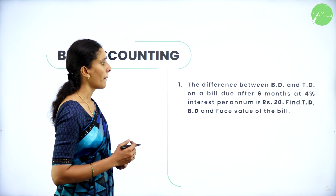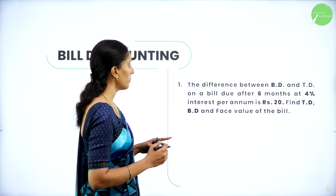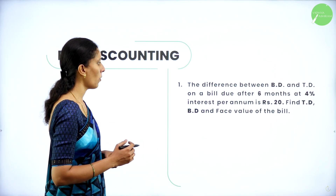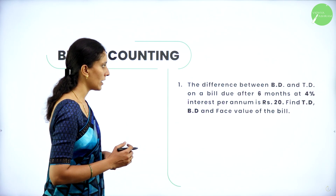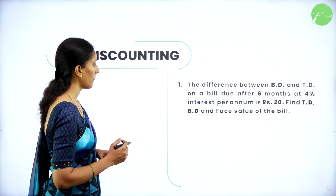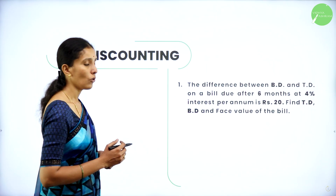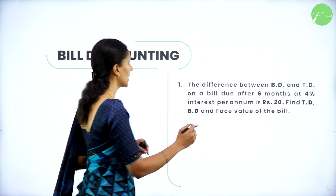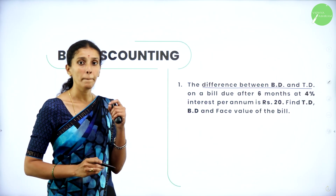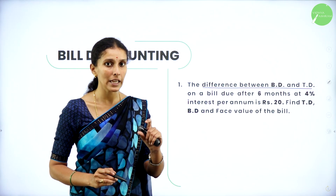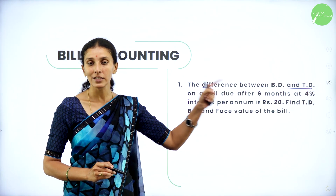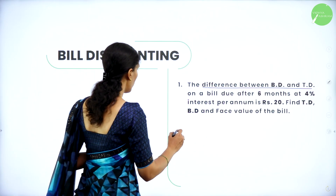The very first problem: the difference between BD and TD on a bill due after 6 months at 4% interest per annum is Rs. 20. Find TD, BD and face value of the bill. What is the difference of BD and TD? That is your banker's gain. What is banker's gain? It is the difference between your banker's discount as well as true discount.